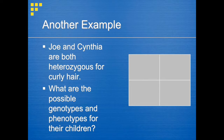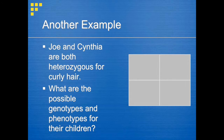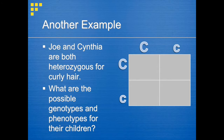Let's work through another example. This time we'll consider Joe and Cynthia, who both have a heterozygous genotype for curly hair. Note that curly hair is dominant and represented by the capital letter C. We want to know the possible genotypes and phenotypes for their children. You have to write the genotypes for Joe and Cynthia. They both have curly hair, so their genotypes must have at least one capital C allele. Since their genotype is heterozygous, Joe and Cynthia have the genotype capital C, lowercase c.